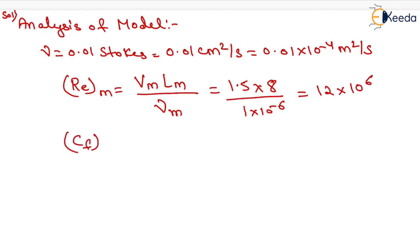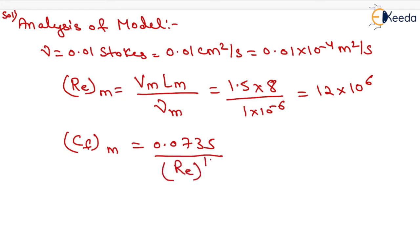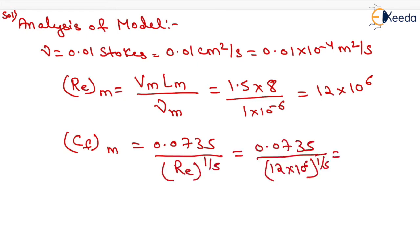For calculating the value of Cf for the model, it equals 0.0735 upon Re to the power 1 by 5, which is 0.0735 upon (12 into 10 to the power 6) to the power 1 by 5, giving 2.82 into 10 to the power minus 3.